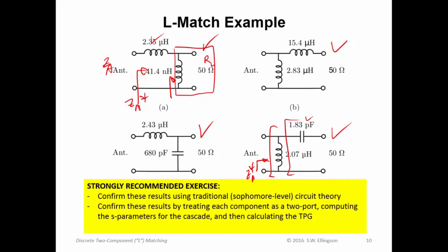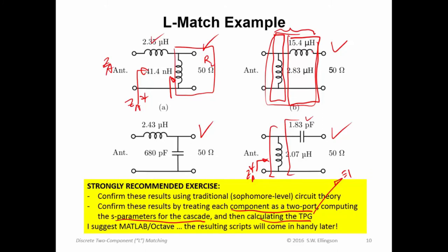Another way to kind of learn about this and to tie it back into theory that we've talked about already is to treat each one of these components as a two-port, and then compute the S parameters for the cascade, and then calculate the TPG. Why? Because if you do that right, the TPG should be one. So one way to check this is to verify that the TPG is one using the S parameter approach. For example, you know how to compute the S parameters for a parallel impedance, and you know how to compute the S parameters for a series impedance. Then you can compute the S parameters for the cascade of those two things. Once you get that, then you have S parameters for the whole circuit, and from that you can compute the TPG, and you can see if the TPG is one, and that will also reinforce your understanding of that theory.